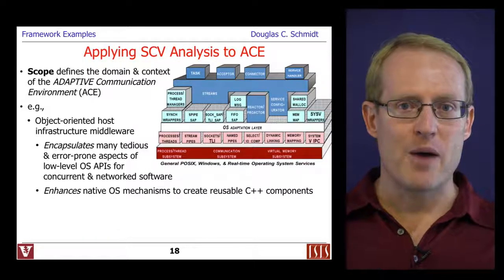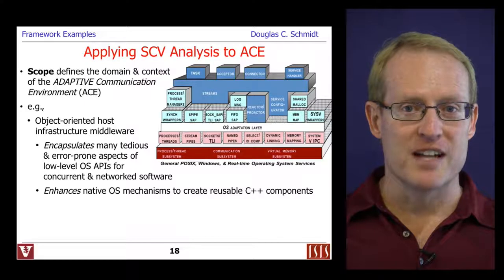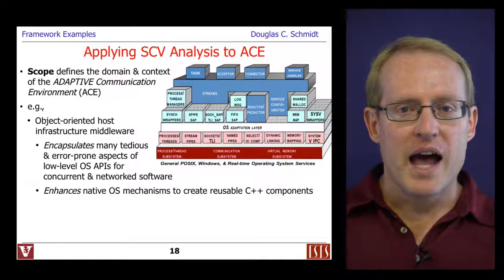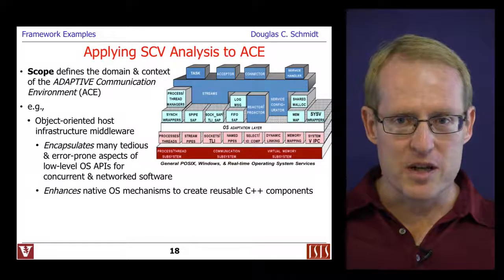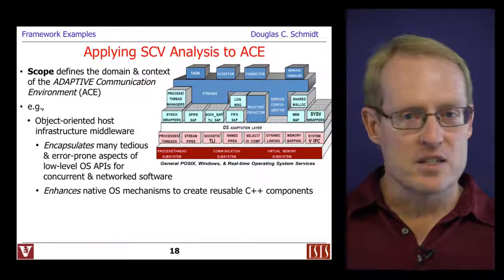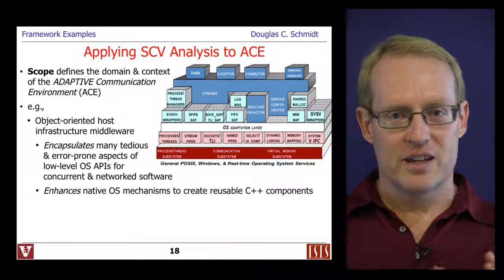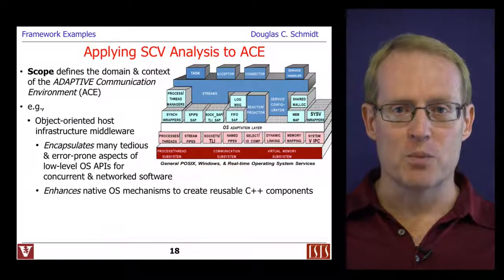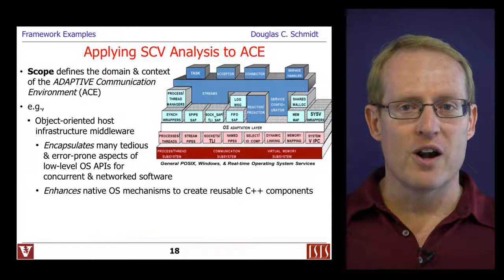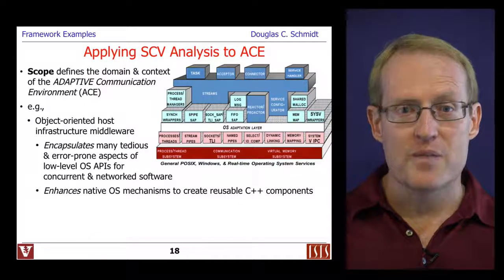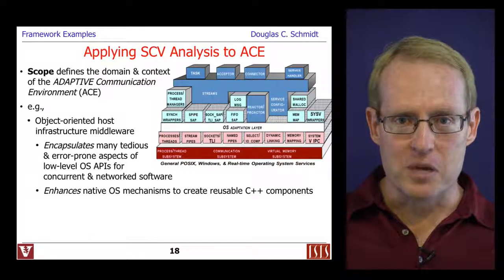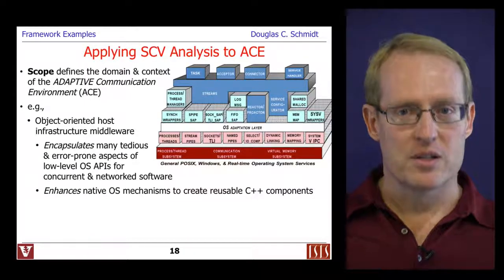Let's shift gears and talk about how we could apply scope, commonality, and variability analysis to another platform — in this case, the Adaptive Communication Environment or ACE. ACE is essentially a set of C++ libraries, toolkits, and frameworks that we've been developing for over 20 years. ACE is designed primarily in the layer of object-oriented host infrastructure middleware — the layer that sits on top of the operating systems and underlying protocols to shield higher level middleware services and applications from the accidental complexities and diversity of those lower level system APIs.